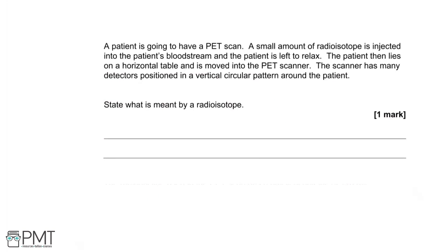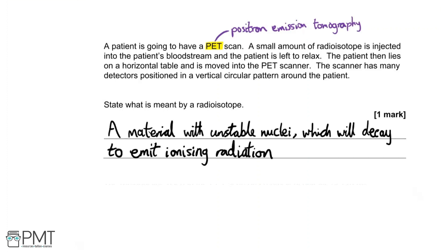A patient is going to have a PET scan — positron emission tomography. A small amount of radioisotope is injected into the patient's bloodstream and the patient is left to relax, then moved into the PET scanner, which has many detectors positioned in a vertical circular pattern. State what is meant by a radioisotope: isotopes are nuclei of the same element with different numbers of neutrons, and a radioisotope is an unstable isotope prone to the emission of ionizing radiation. One mark.